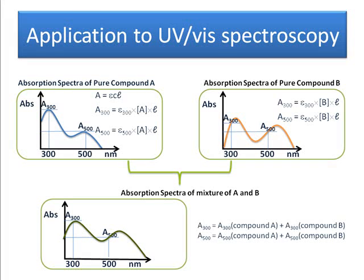And the absorption at 500 is equal to the absorption due to A at 500 plus the absorption due to B at 500. And note here I'm only choosing 300 and 500 just as an example. You can choose any two wavelengths where both compounds absorb.